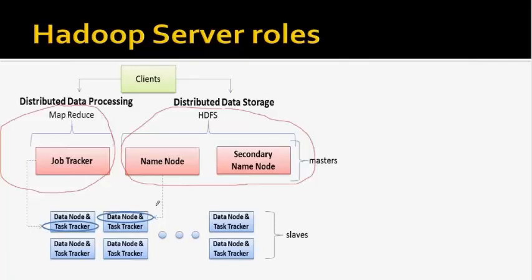Let's talk about HDFS first. Both HDFS and MapReduce follow a master-slave architecture. In HDFS, the master is the name node and the slaves are the data nodes. In MapReduce, the master is the job tracker and the slaves are the task trackers.